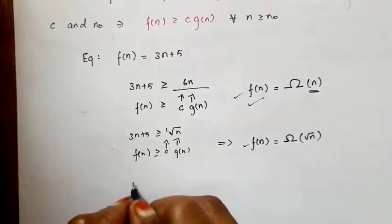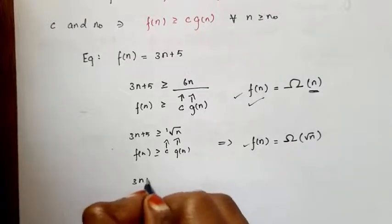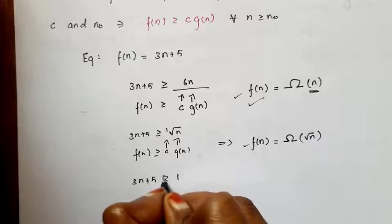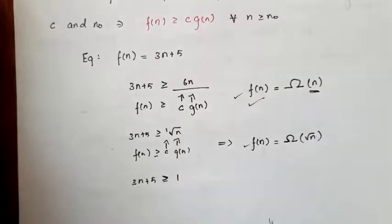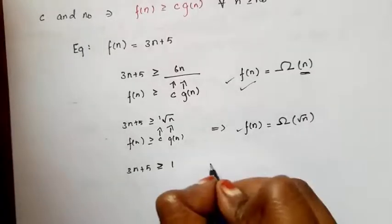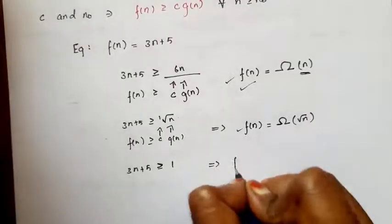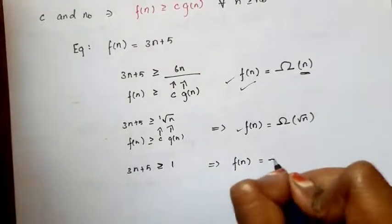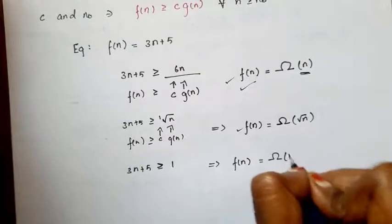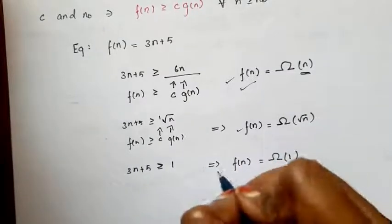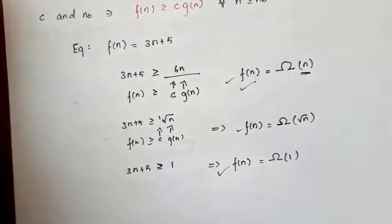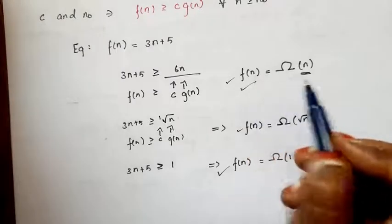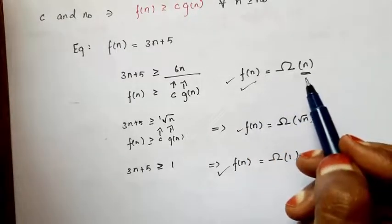You can also write 3n plus 5 ≥ 1, which is clearly true, so f(n) = Ω(1) is also valid. But we will take the nearest one, which is Ω(n).